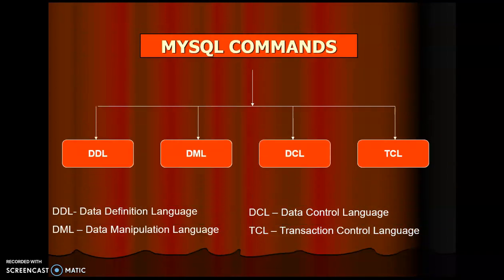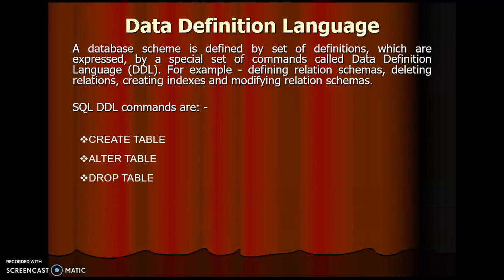This is the flowchart. We have categorized the MySQL commands into different sections: DDL, DML, TCL, and DCL — that is, Data Definition Language, Data Manipulation Language, Data Control Language, and Transaction Control Language. Data Definition Language defines a database schema through a special set of commands called DDL — for example, defining relation schemas, creating indexes, and modifying relation schemas. DDL is basically used to define and modify the database. The DDL commands include CREATE TABLE, ALTER TABLE, DROP TABLE, and CREATE INDEX.